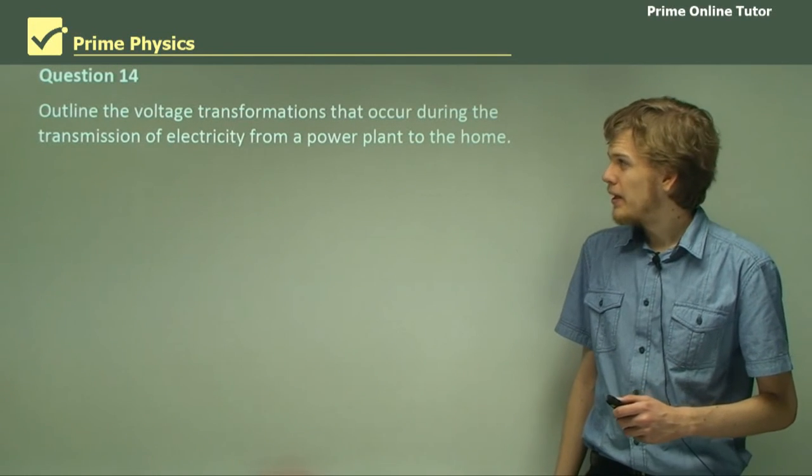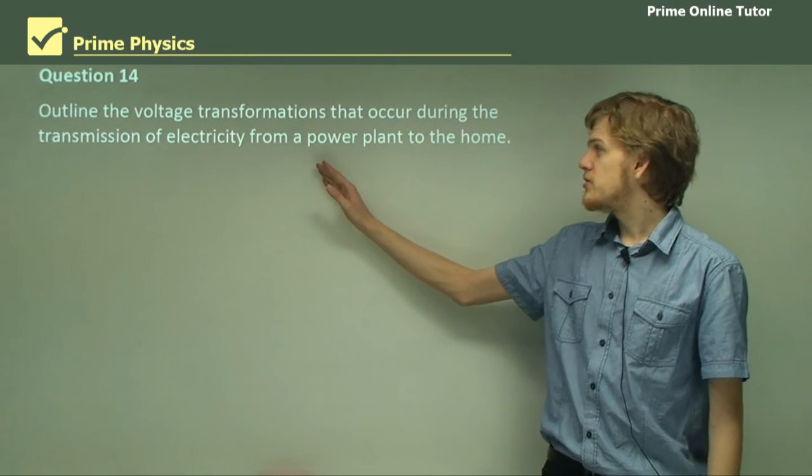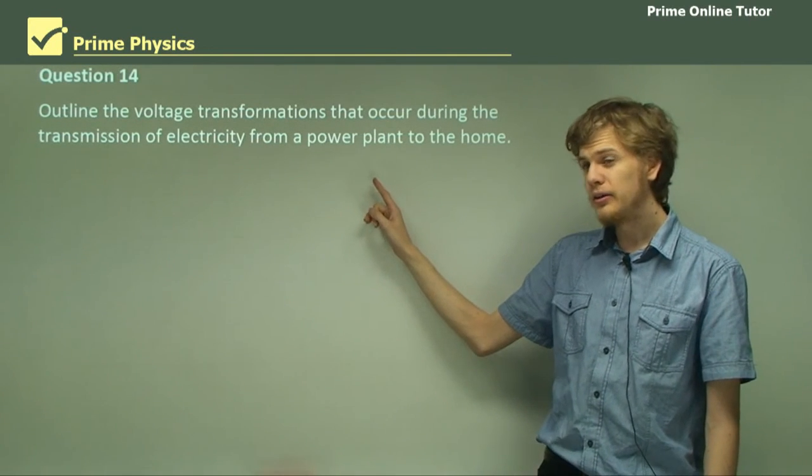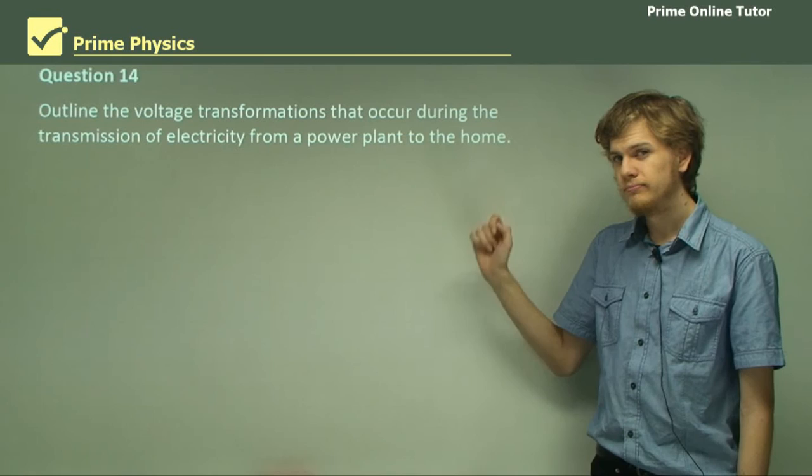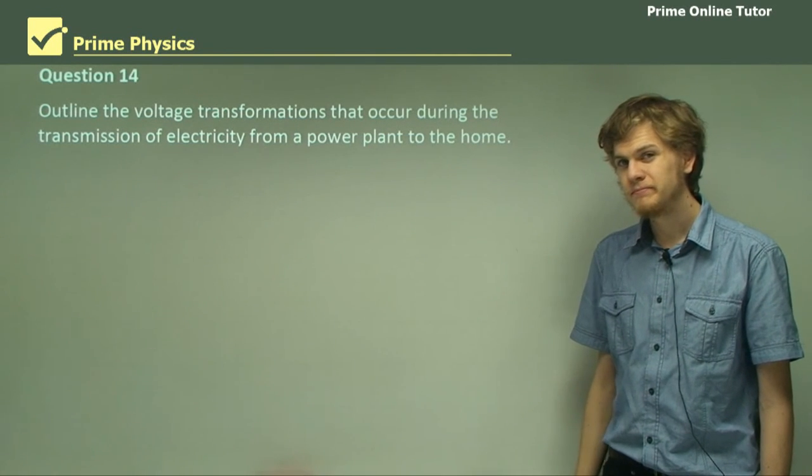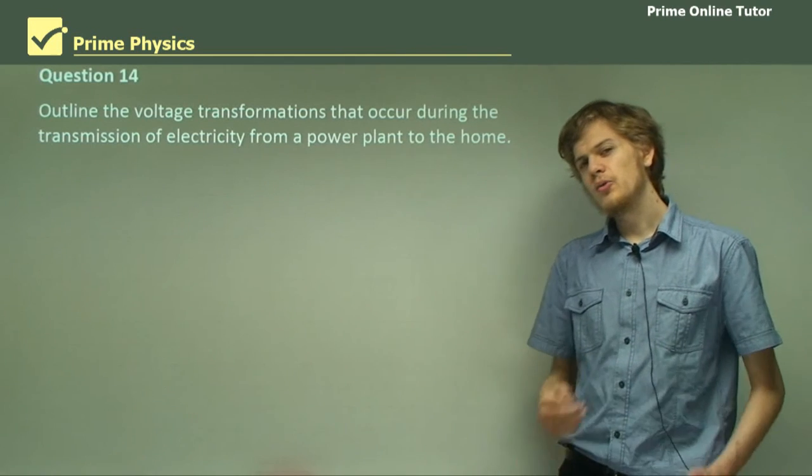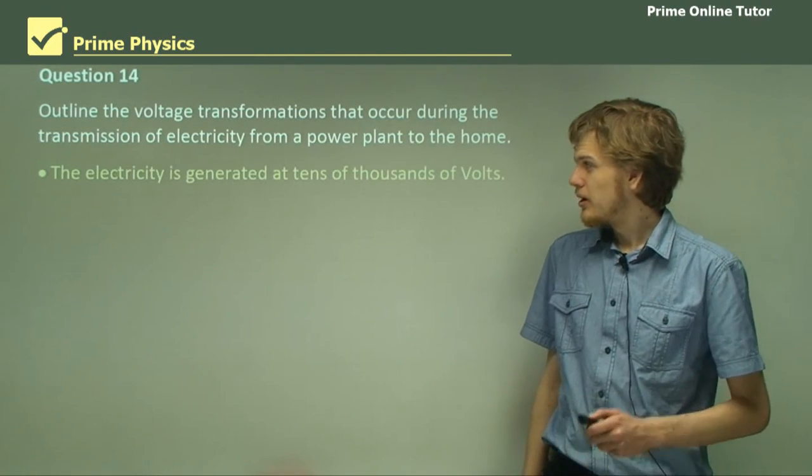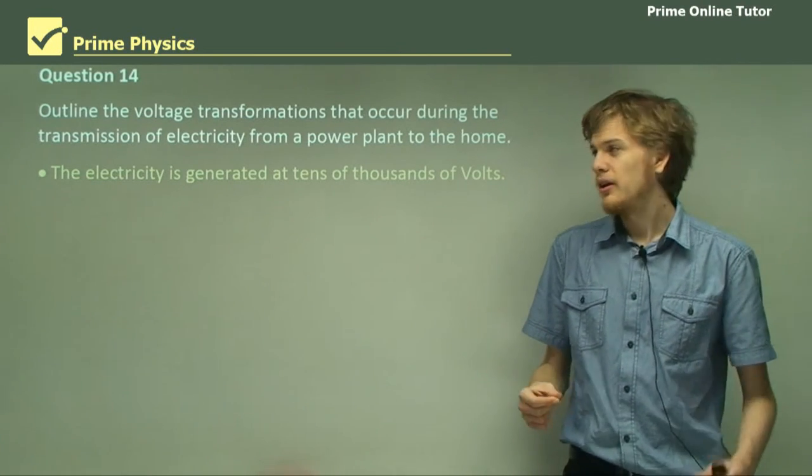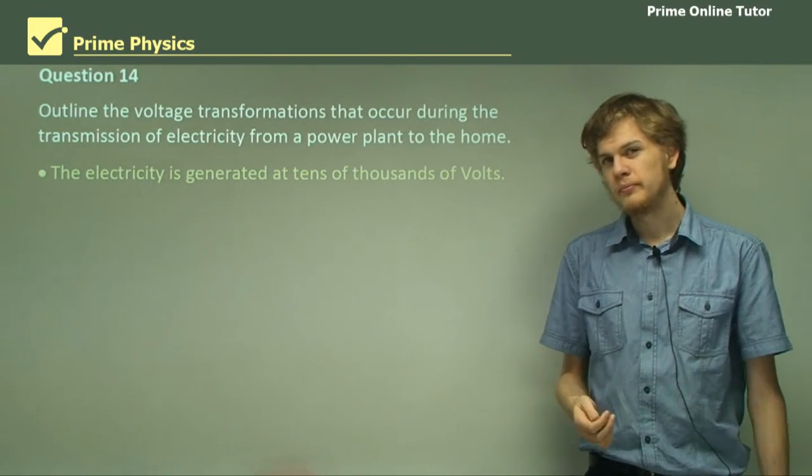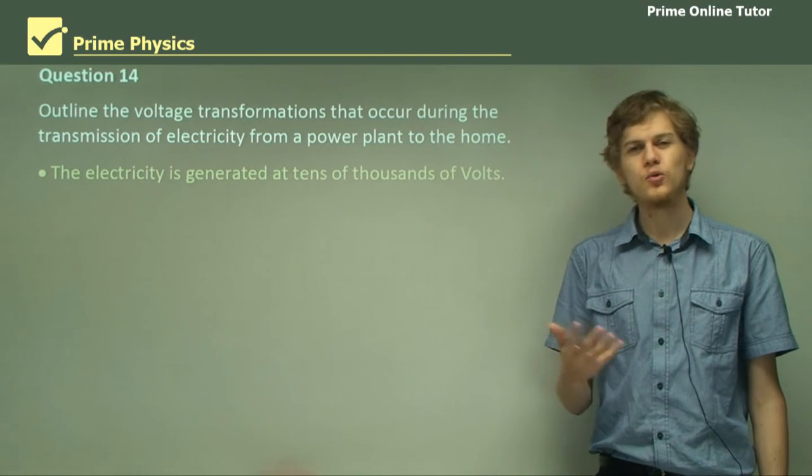Question 14. Outline the voltage transformations that occur during the transmission of electricity from a power plant to the home. There's more than one transformation. Right, let's start with the generation of the electricity. The electricity is generated at a voltage of tens of thousands of volts. So between 10 kilovolts and 20 kilovolts.